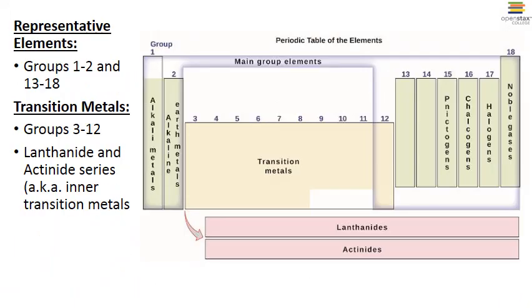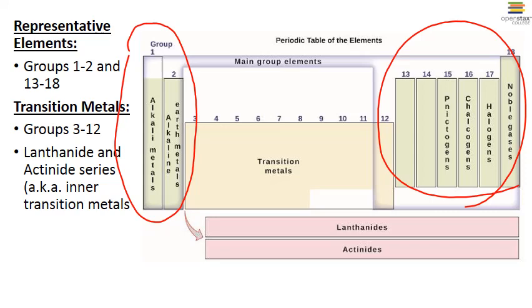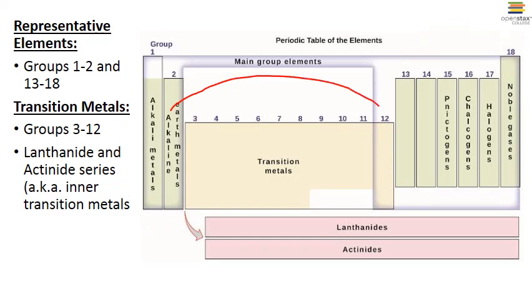The periodic table can also be broken down further into regions. Groups 1 and 2 and 13 through 18 are all known as the representative elements. While groups 3 through 12 are called the transition metals. The two rows in pink at the bottom are known as the lanthanide and actinide series. And they're actually part of the transition metals as well. And oftentimes you'll hear these referred to as the inner transition metals. These groupings actually reflect patterns of electron structure, which we'll talk about later in the semester.